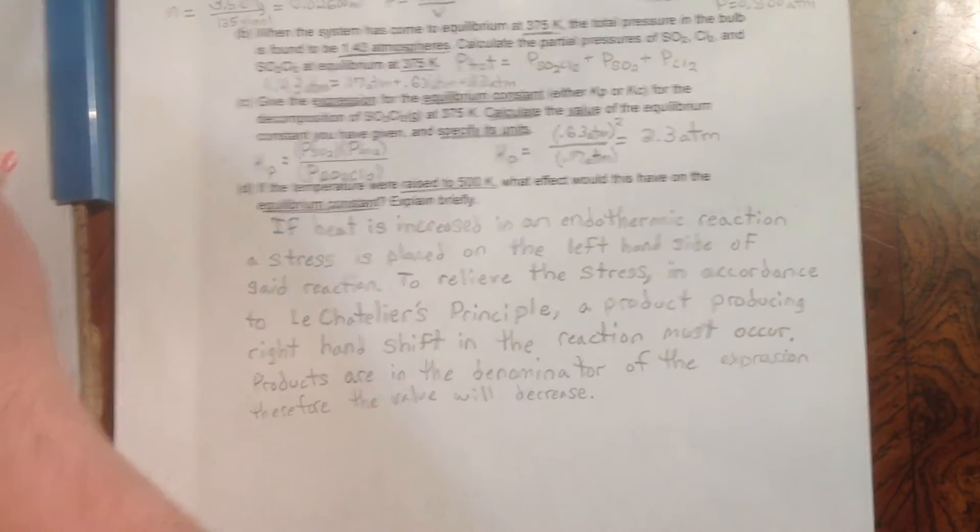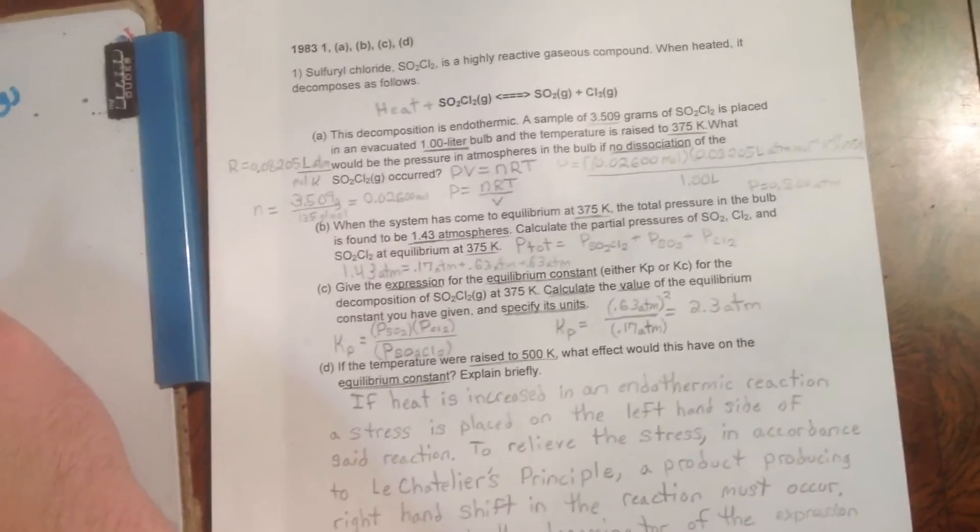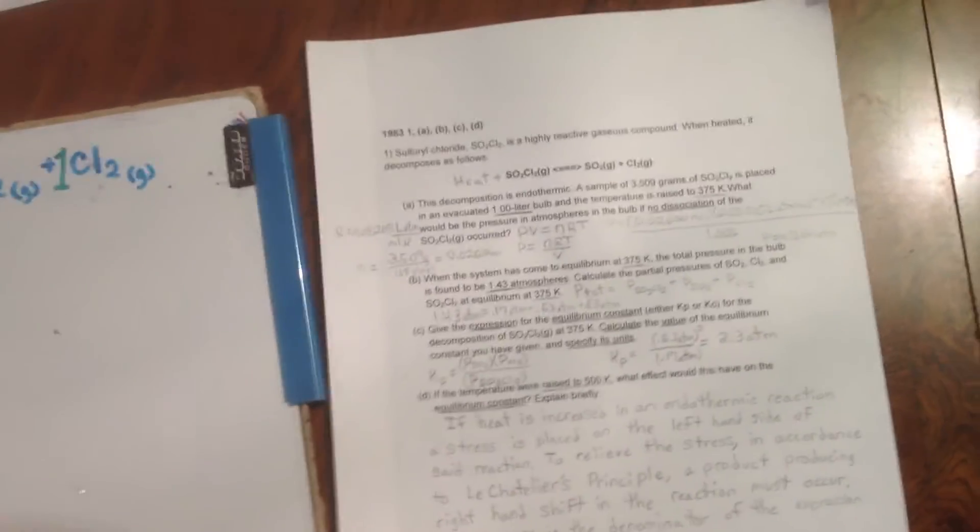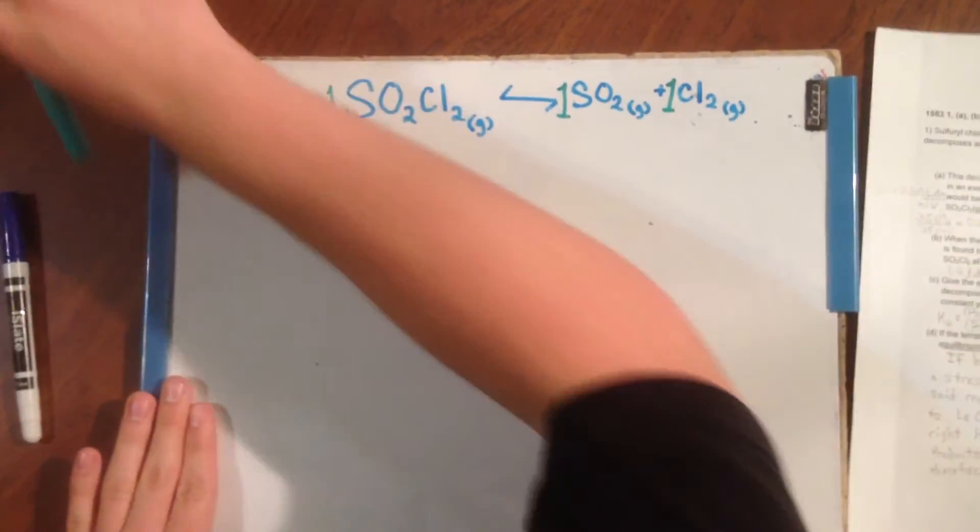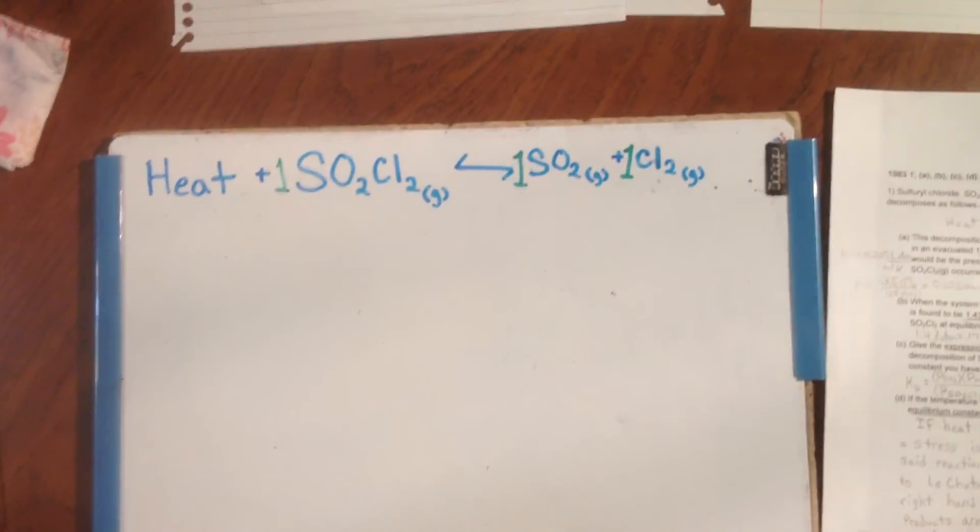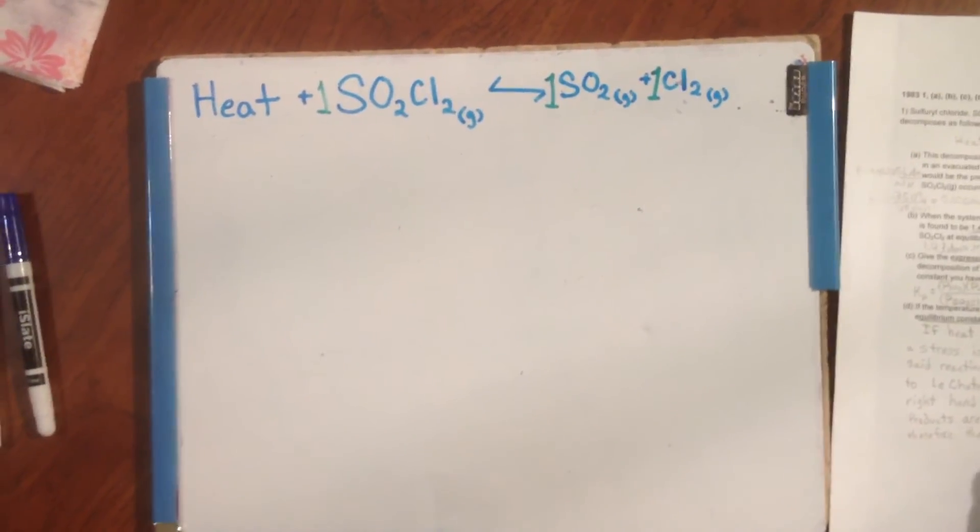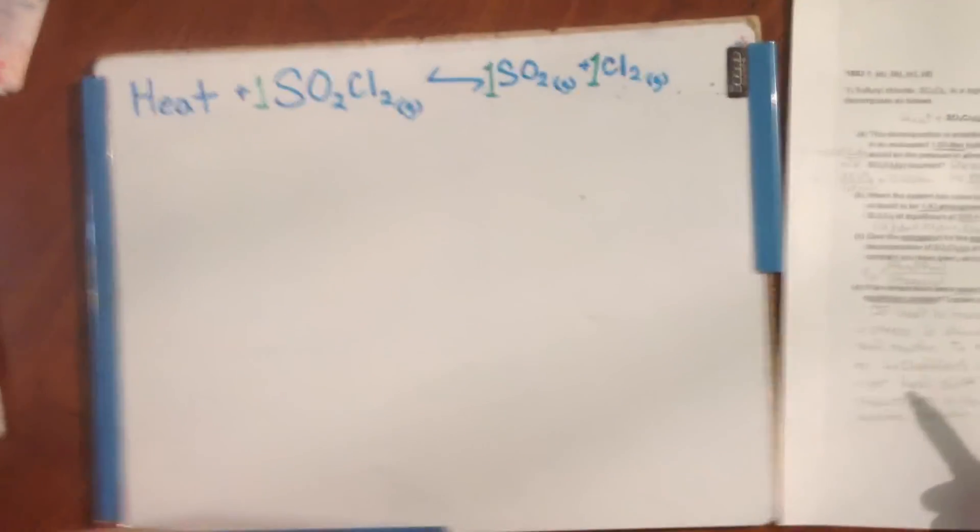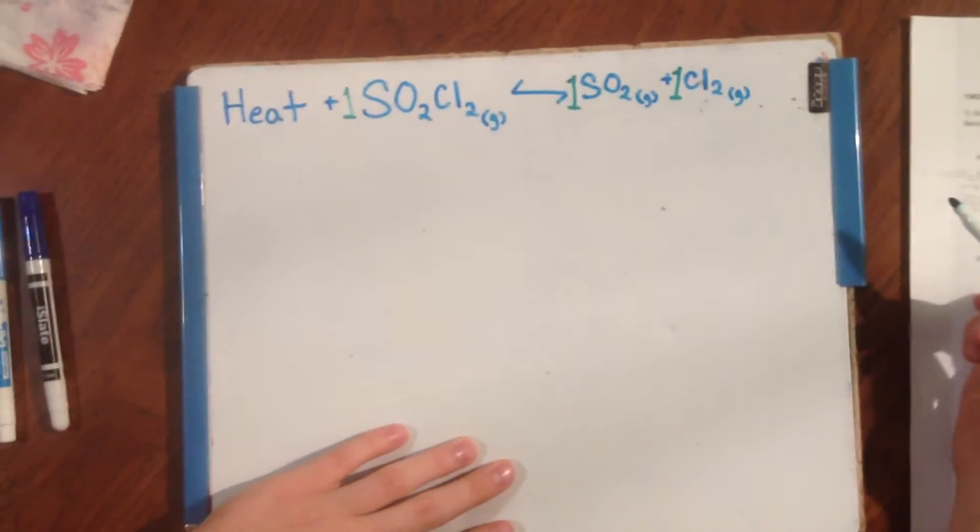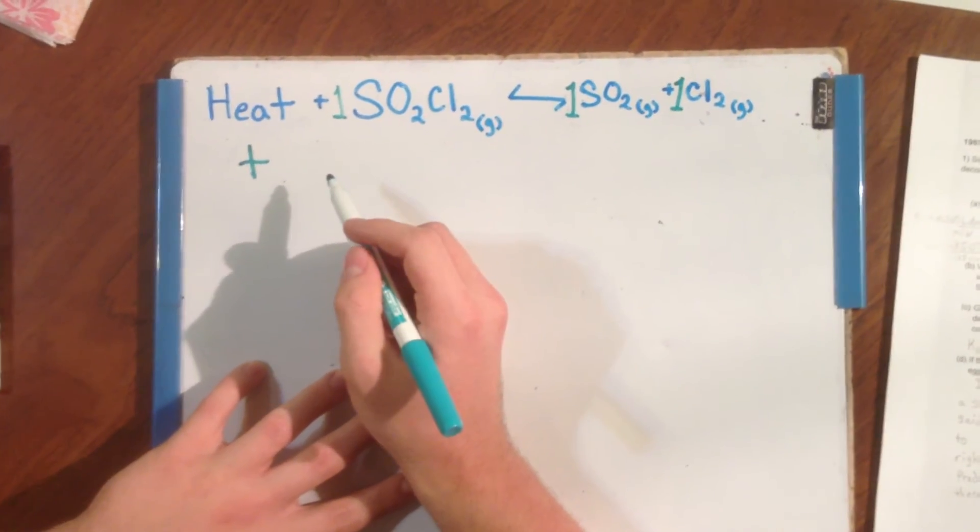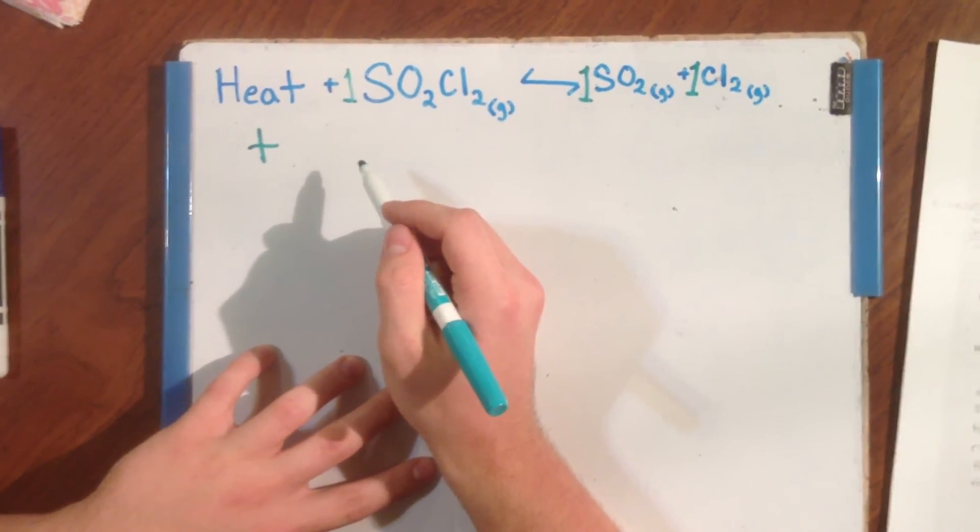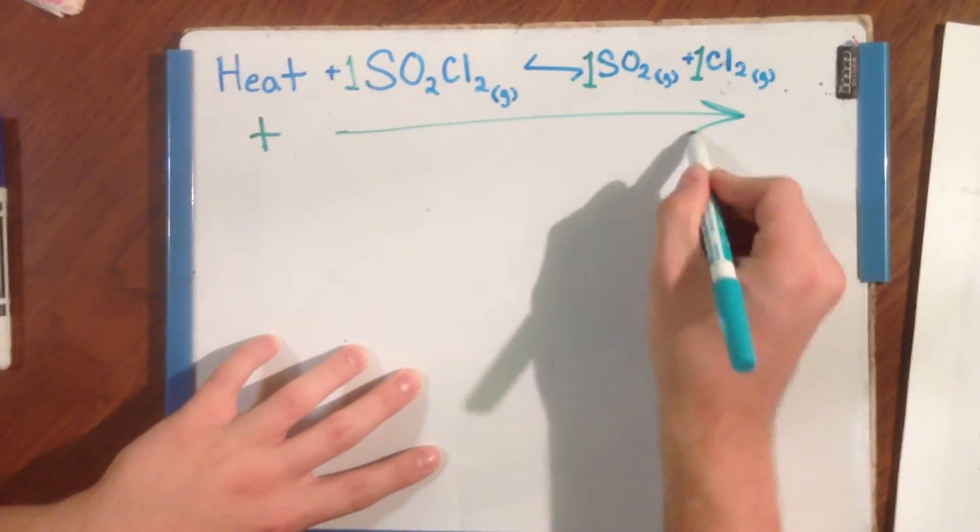If a dynamic equilibrium is disturbed by changing the conditions, the position of the equilibrium moves to counteract this change. So, this means that if something is added to the left side of the equation, the right-hand shift will occur to restore equilibrium. And so, if the heat was increased, plus heat,